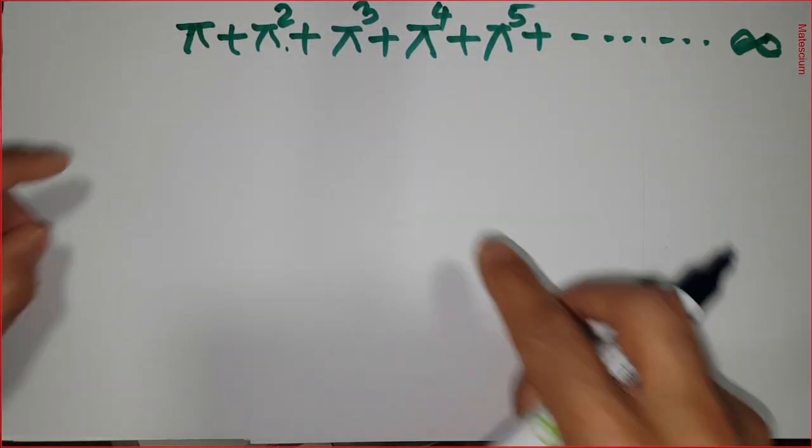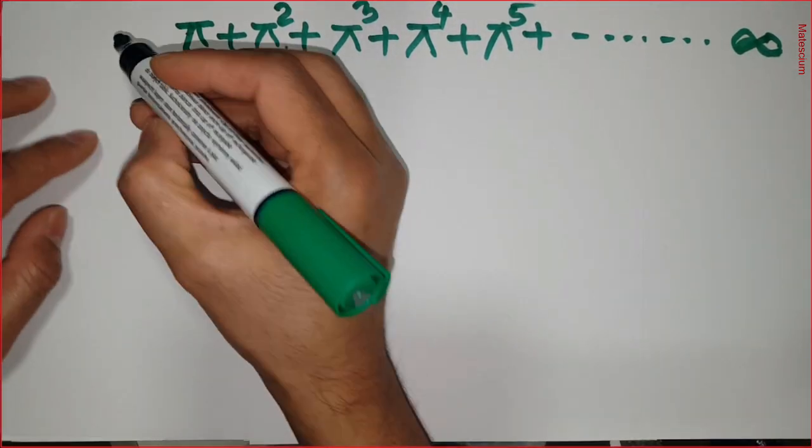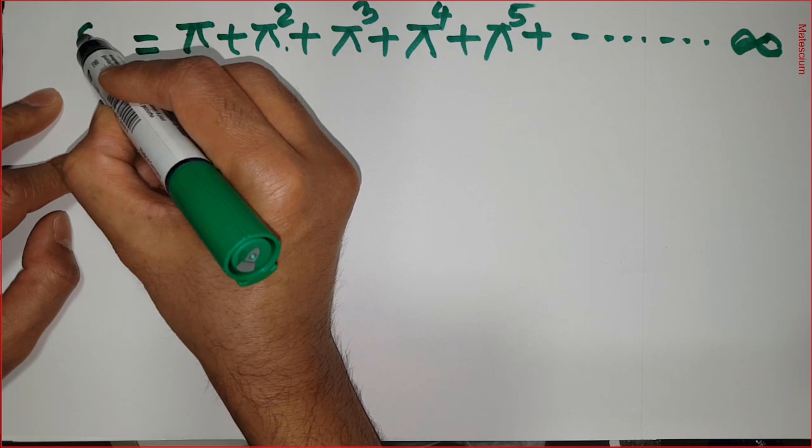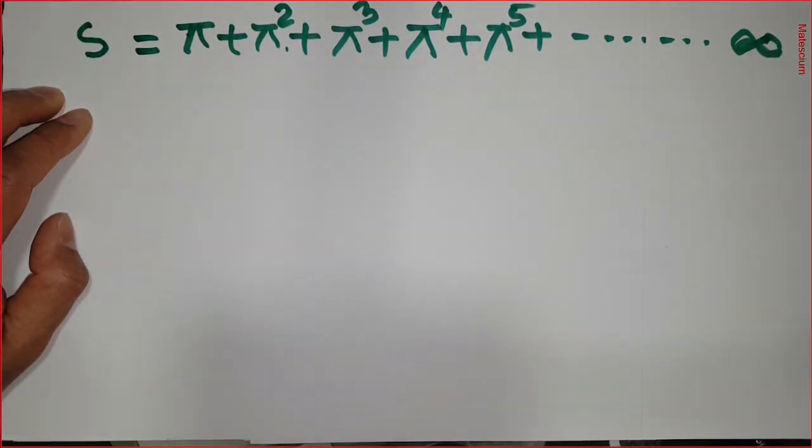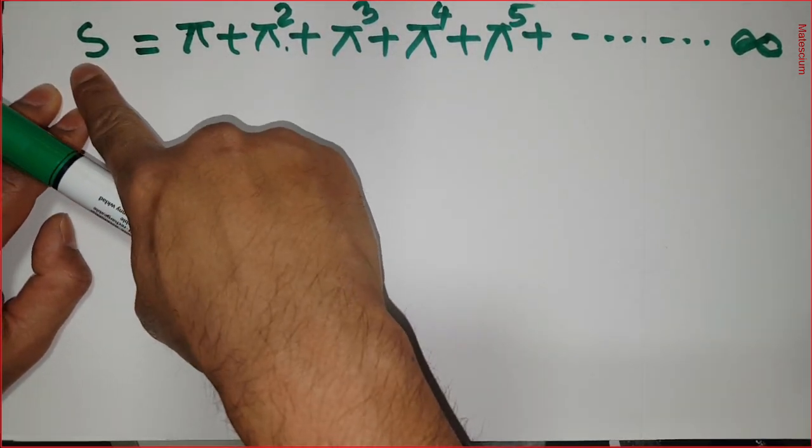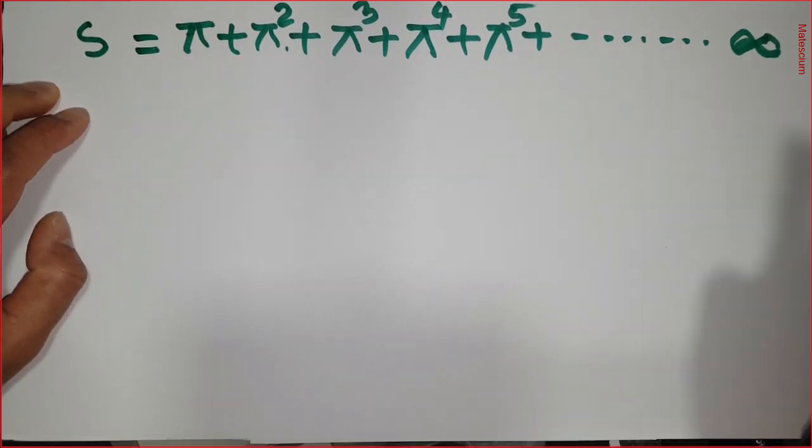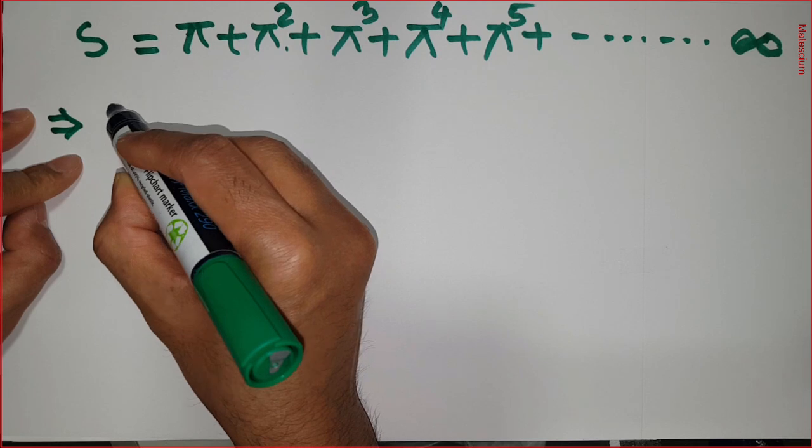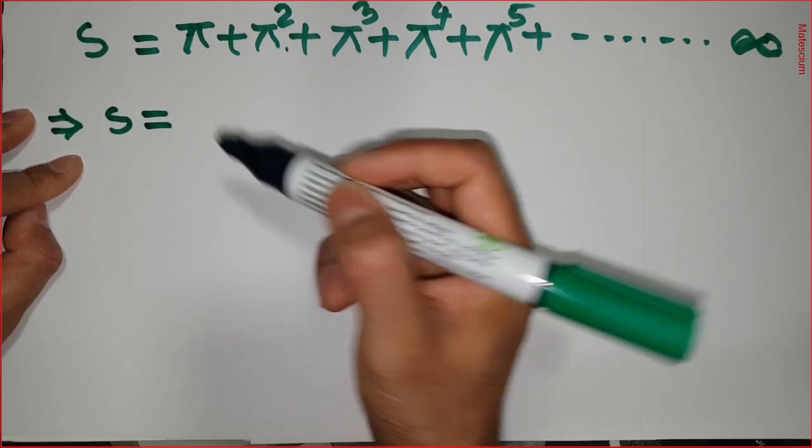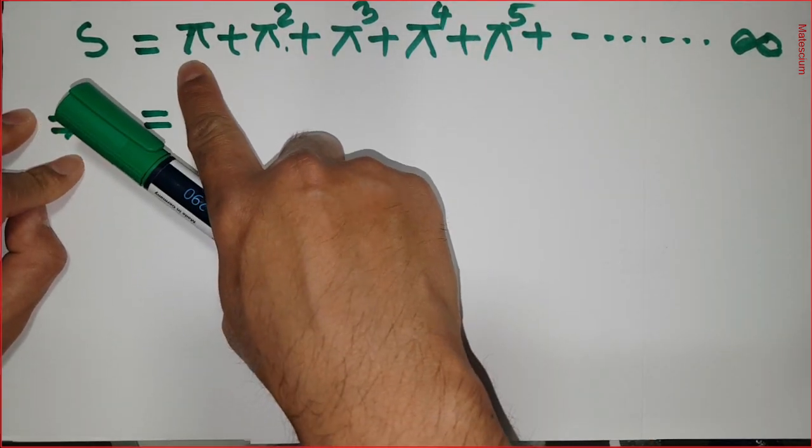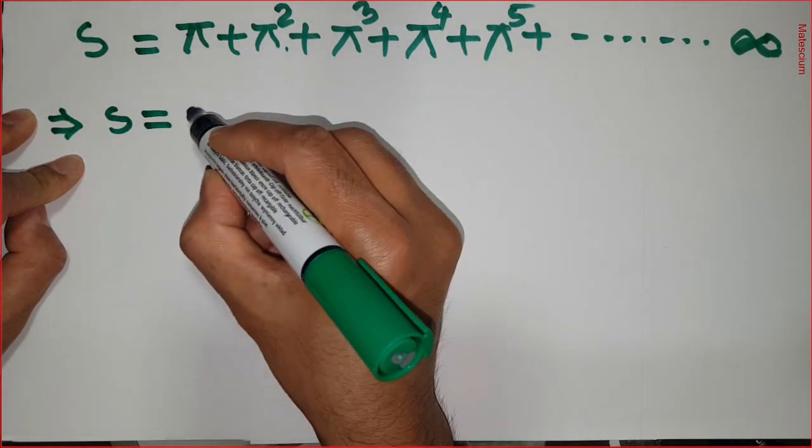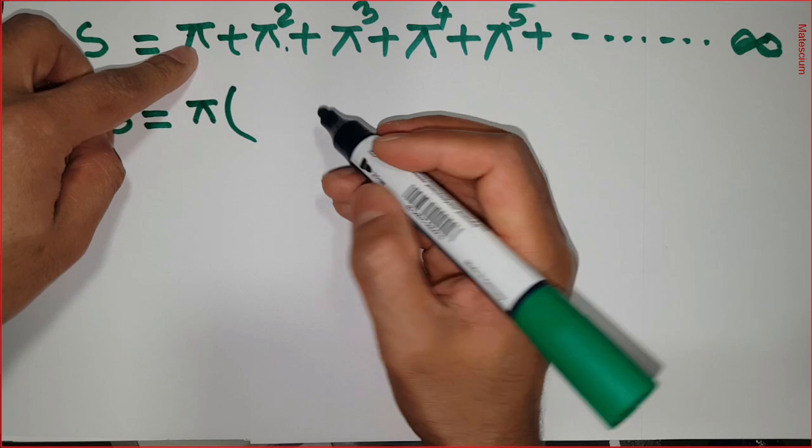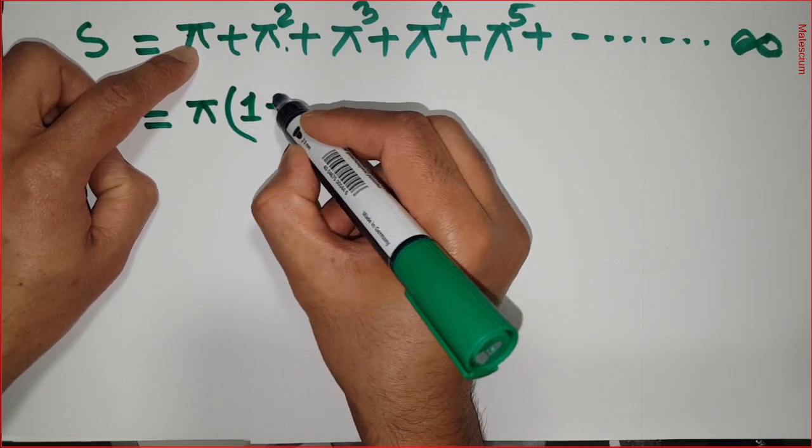Let me show you how to calculate this infinite series of π. Let us consider the summation of this series is equal to any random parameter - let's say the summation of this series equals S. Now, next statement: S equals - I'm going to take one π common from the right-hand side.